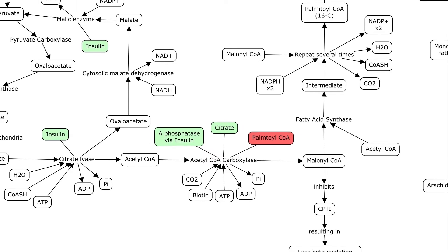Our acetyl-CoA is going to go to acetyl-CoA carboxylase, another heavily regulated enzyme. It adds a CO2, uses biotin and ATP, and kicks off ADP and phosphate. It's indirectly regulated by insulin. When you haven't eaten in a while, glucagon is high, which starts a cascade that phosphorylates many things. Acetyl-CoA carboxylase is one that is inactivated when phosphorylated. So conversely, when you've just eaten, blood glucose is high, insulin goes up, and insulin activates a phosphatase that dephosphorylates acetyl-CoA carboxylase, making it active. That's what drives that reaction.